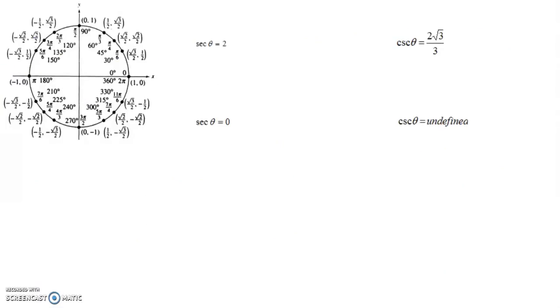If we keep going with these next four, secant of theta is the reciprocal of sine. Excuse me. Secant of theta is the reciprocal of cosine. So if I'm thinking cosine, I'm thinking x value.